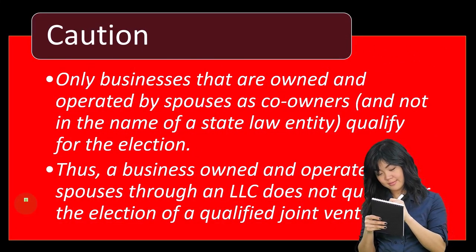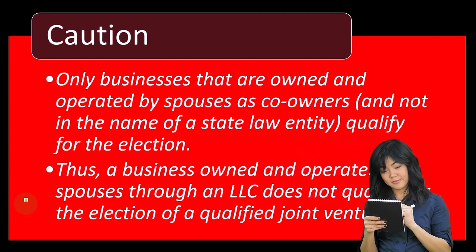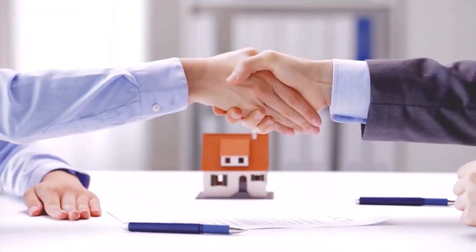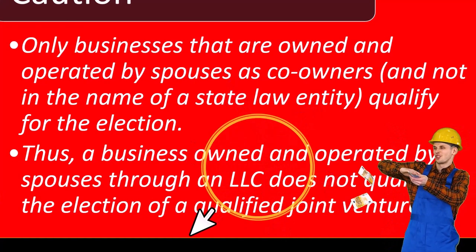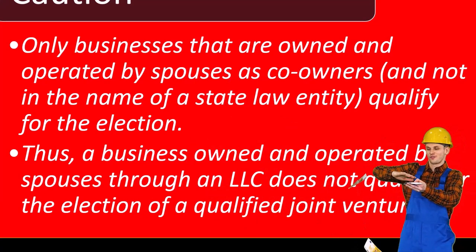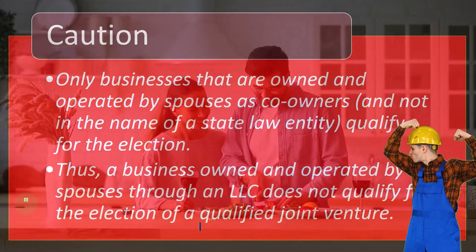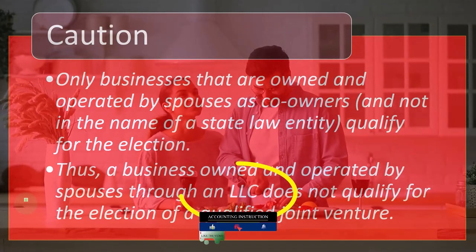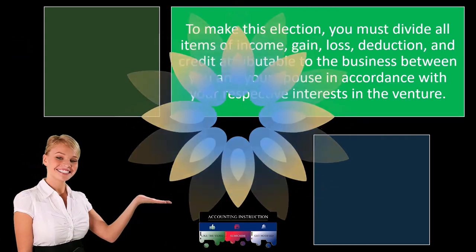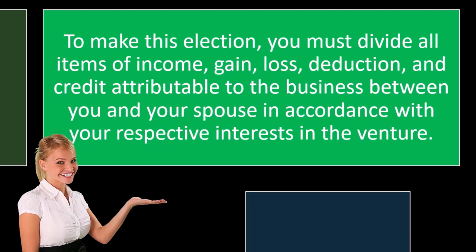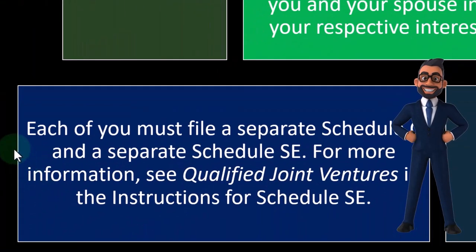If you're operating through an LLC, normally it's taxed like a partnership with a separate legal entity. A single-member LLC might still allow a Schedule C filing, offering some liability protection, but two spouses may not qualify for the single-member LLC situation. In that case, you'd be filing like a partnership — a more complex entity return than a simple Schedule C. To make the qualified joint venture election, you must divide all items of income, gain, loss, deduction, and credit attributable to the business between you and your spouse in accordance with your respective interests in the venture.